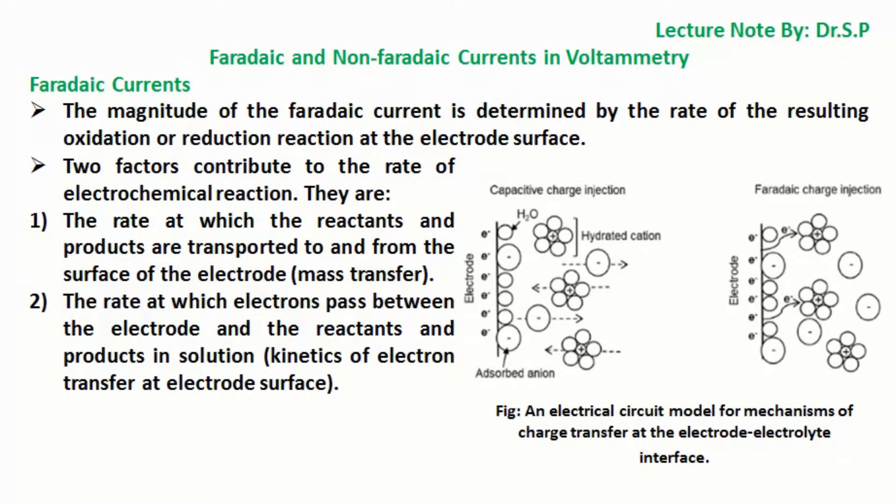Two factors contribute to the rate of electrochemical reaction. They are: the rate at which the reactants and products are transported to and from the surface of the electrode (mass transfer), and the rate at which electrons pass between the electrode and the reactants and products in solution (kinetics of electron transfer at electrode surface).